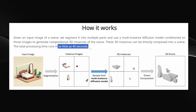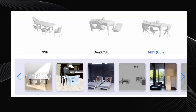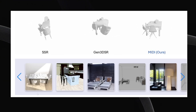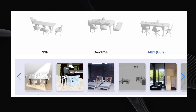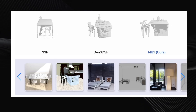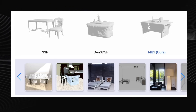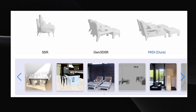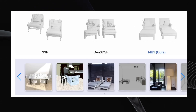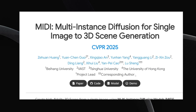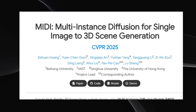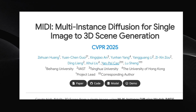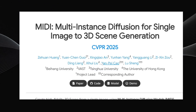When you compare MIDI to other competitors like SSR and Gen 3 DSR, it's not even close. Look at this photo of a kitchen table — MIDI's generation is far more accurate. Or this complex kitchen scene: MIDI reconstructs it beautifully, while the other two have significant flaws. And finally, these patio chairs — again, MIDI's result is superior. The awesome thing is, they've already released the code. If you click on the GitHub repo link, you'll find all the instructions to download and run it locally. I'll link to this main page in the description so you can explore further.